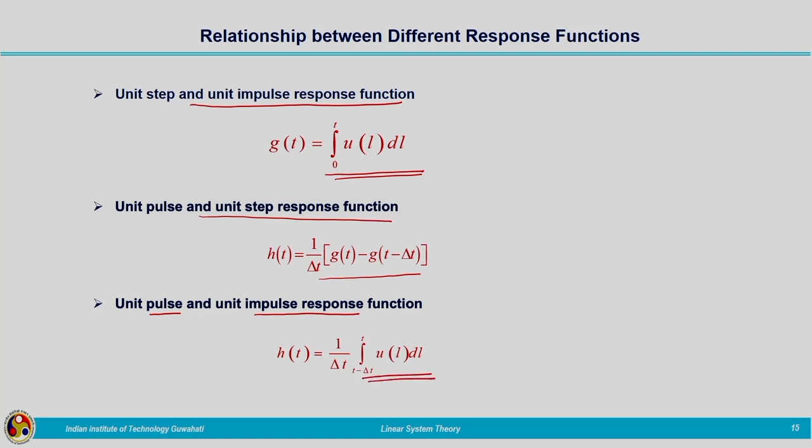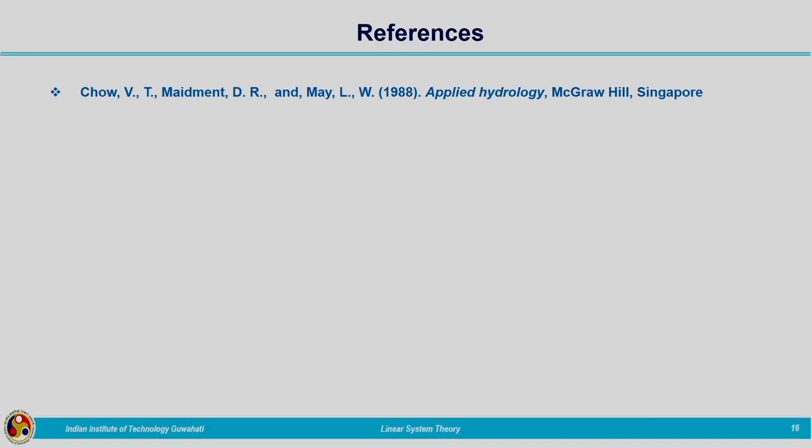In this lecture we discussed linear system theory — the principles of proportionality and superposition required for hydrologic analysis. We covered the three input functions: impulse, step, and pulse inputs, and their corresponding response functions. We also derived the interrelationships between the impulse, step, and pulse response functions. The reference for this topic is the textbook Applied Hydrology by Ven Te Chow and others. Thank you.